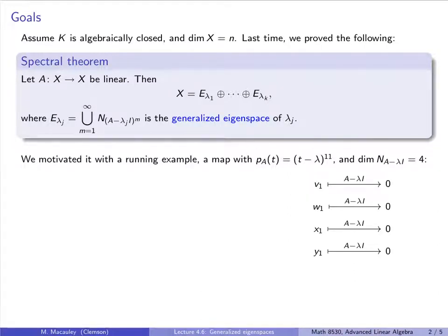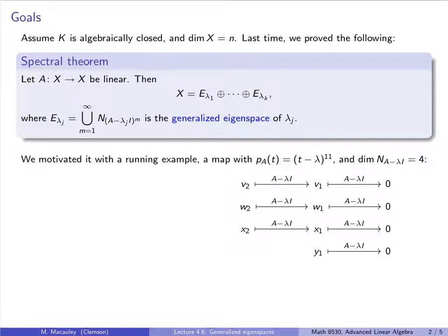Let's recap how we did that. We took four generalized eigenvectors that are linearly independent — in other words, they get mapped to zero — and we claimed we could always find preimages of at least some of these under A minus lambda I. So let's say v2, w2, and x2 are preimages. It's not necessarily true that if you take any four linearly independent vectors v1 up to y1 you can find preimages for three of them, but what is true is that you can find a basis that has preimages for three of them.